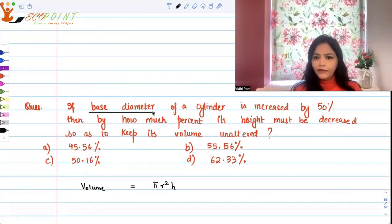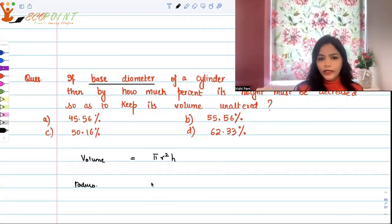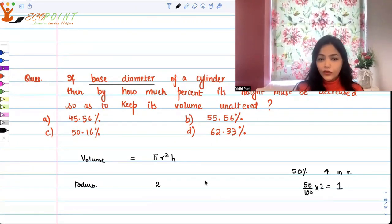Let's assume radius was 2 initially. There is a 50 percent increase in the radius, so 50 percent of 2 is 1. That means 1 increase, so the new radius is 3.